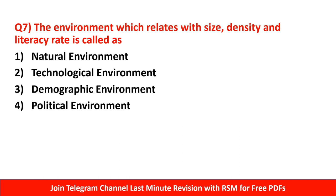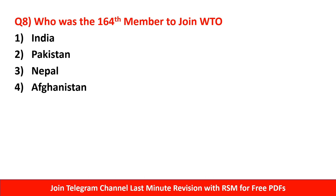Question number 7: The environment which relates with size, density and literacy rate is called - natural environment, technological environment, demographic environment, or political environment. Remember, where age, sex, population, density, size, urban-rural, and literacy rate are discussed, that is related to demographic environment. Where male-female population is discussed - all those things are related to demographic environment.